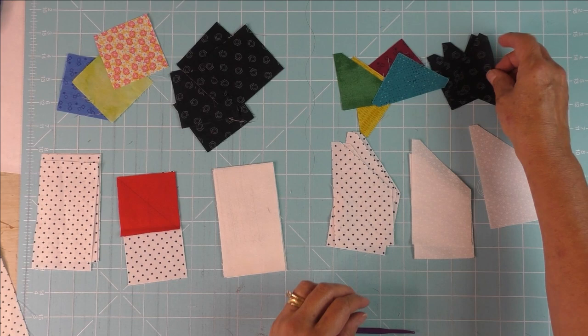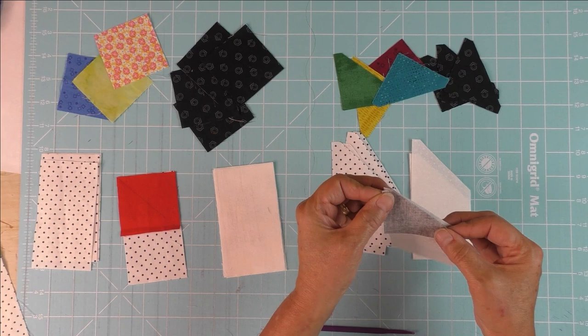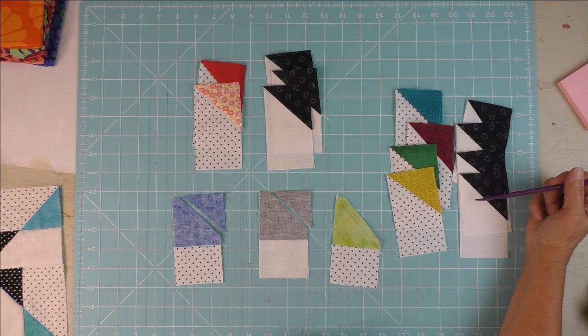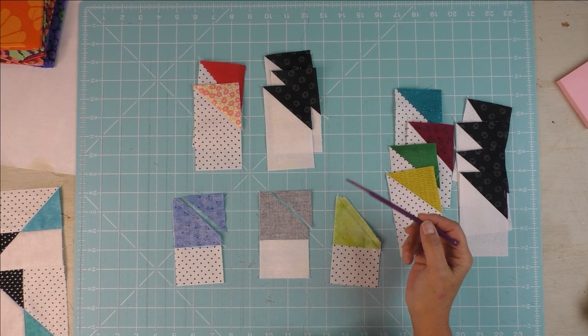For the AccuQuilt pieces, you simply take the two pieces, the triangle and the chisel, put them together like this and then stitch down the side. Here are the pieces for the AccuQuilt all pressed.